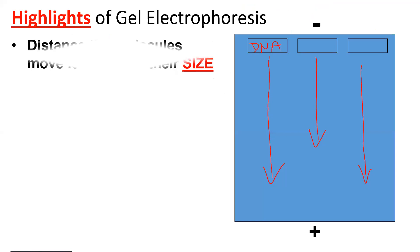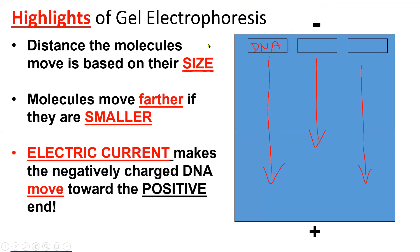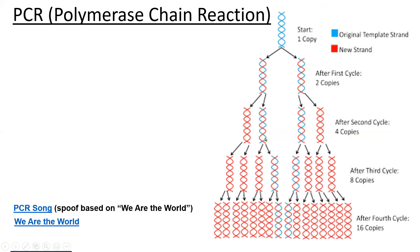So the smaller fragments move further, and the bigger ones don't go as far. What you end up with is a unique banding pattern. The highlight: molecules of DNA move based on their size — small ones move further. The electric current is what forces the DNA to move, because DNA is negatively charged. Then computers can analyze the patterns and it becomes more digitized, rather than looking at a physical gel.